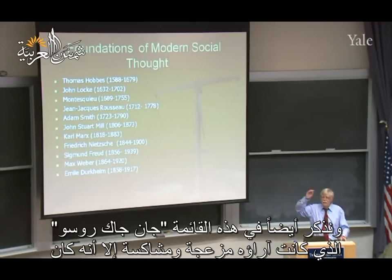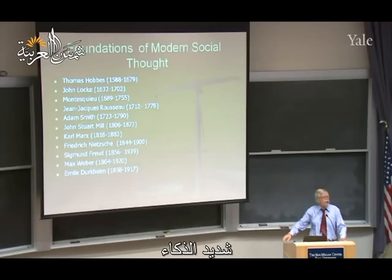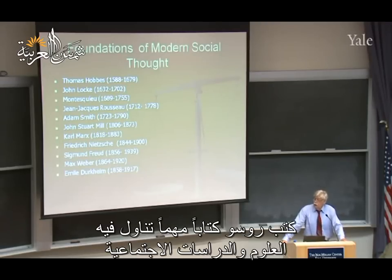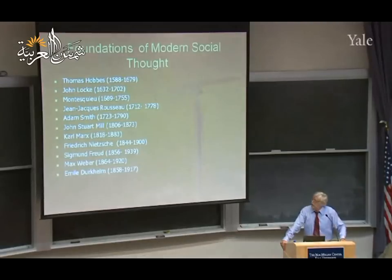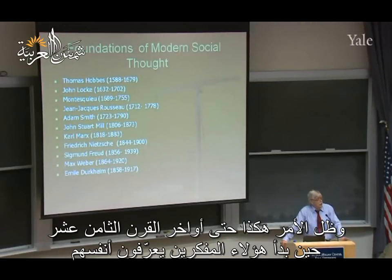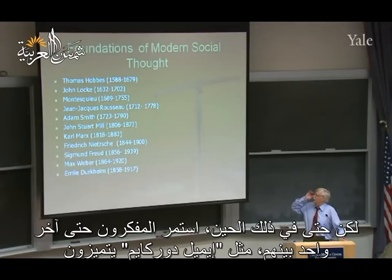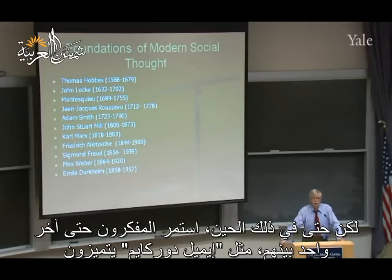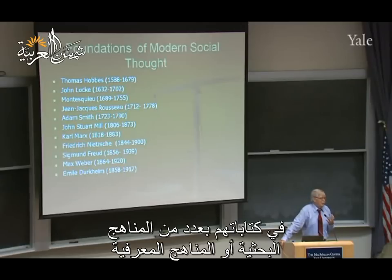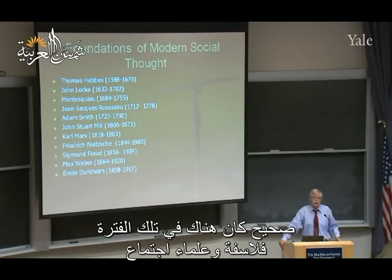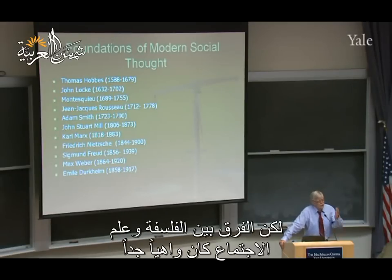Jean-Jacques Rousseau, a real pain in the neck but an extremely smart guy, also wrote an important book which dealt with sciences and social studies. It's really by the late 18th century that people are beginning to identify as studying society or human behaviour. But even then, until the very last author — Emil Durkheim — people identified themselves with a number of disciplinary approaches. They were social scientists, or philosophers. The difference between philosophy and social science is a very vague one.